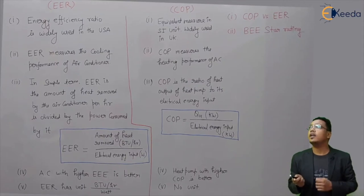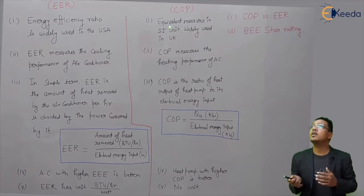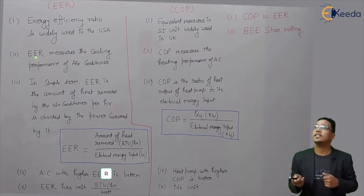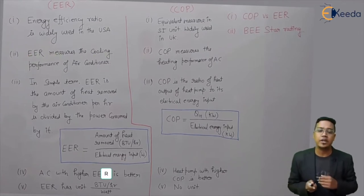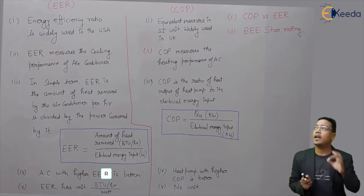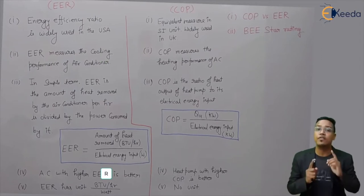EER is an energy efficiency ratio which is widely used in USA. COP is an equivalent measure in SI units and is widely used in UK. Now, the second and most important difference: EER measures the cooling performance of air conditioning.